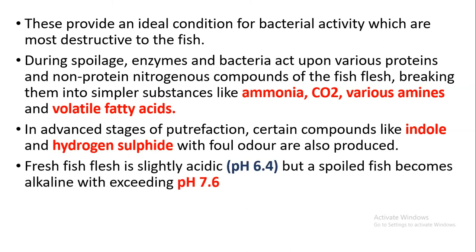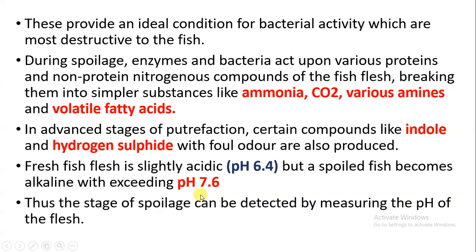Fresh fish has an acidic pH of about 6.4. But as the fish spoils, the pH changes and becomes alkaline, exceeding about pH 7.6. So this is how the stage of spoilage can be detected by measuring the pH of the flesh.